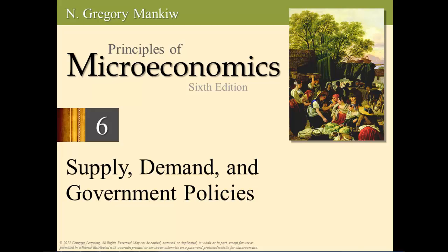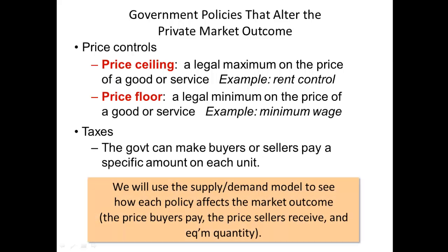When we talk about government policies and laws, there are two types of commonly used policies: price controls and taxes. Remember from Chapter 4, markets are used to organize economic activity. Some economists and policymakers believe the government should not regulate or should only minimally intervene in market activity. The two most commonly used policies are price controls and taxes. There are two types of price controls: price ceiling and price floor. We'll speak to taxes later in the lecture.